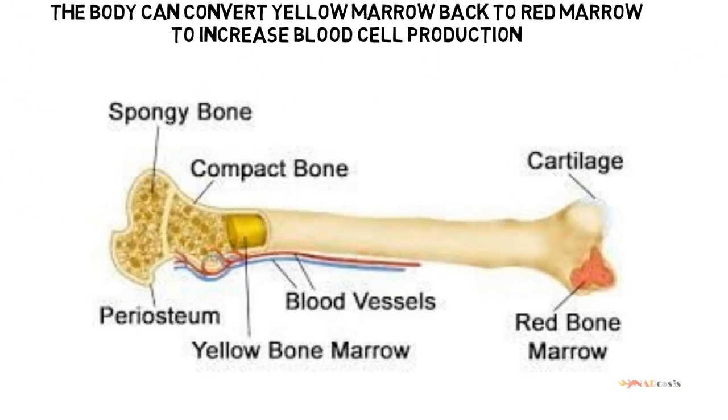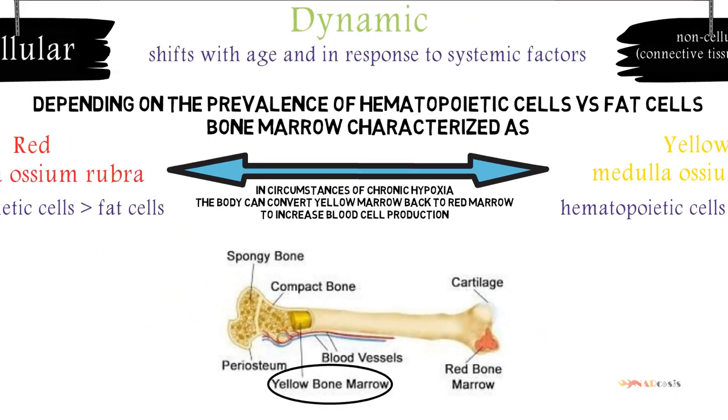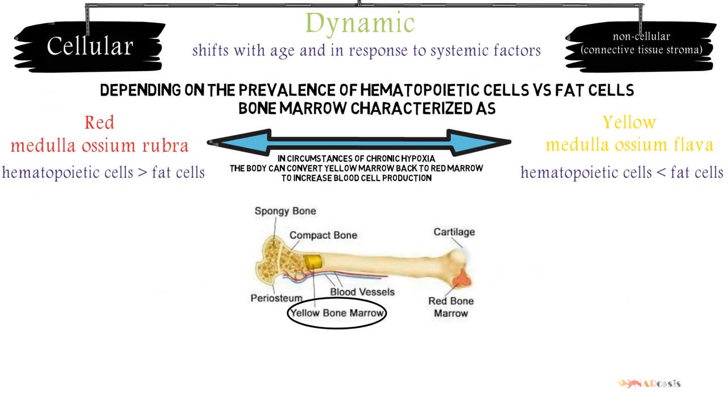This is the spongy bone which is lined by thin vascular membrane called endosteum and surrounded by compact bone. This is the red marrow and this is the yellow marrow.